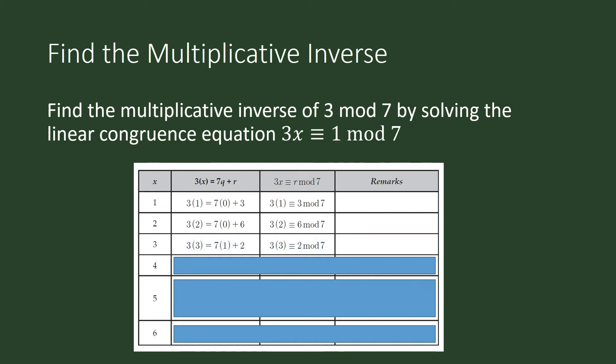Is it 3? No, because 3 times 3 is 9. When you divide 9 by 7, the remainder is 2, so 3 times 3 is congruent to 2 modulo 7. Is it 4? No, because 3 times 4 is 12, and 12 divided by 7 has a remainder of 5, so 3 times 4 is congruent to 5 modulo 7.